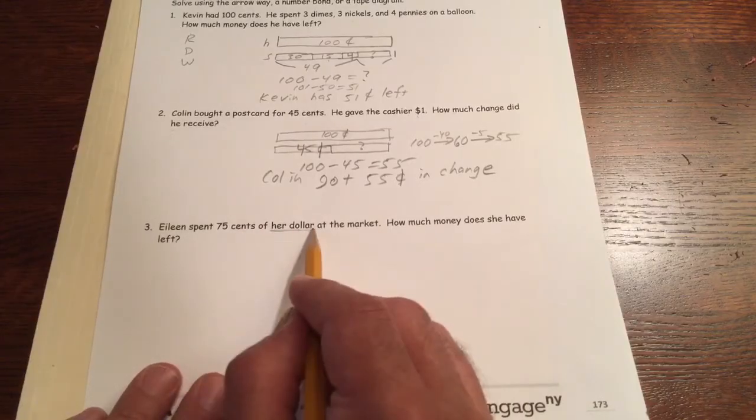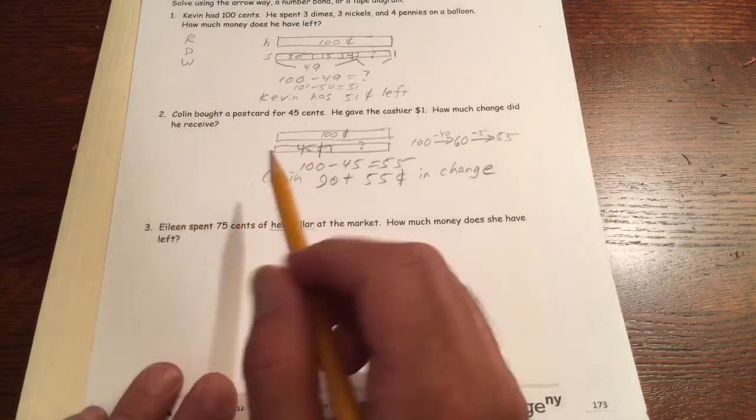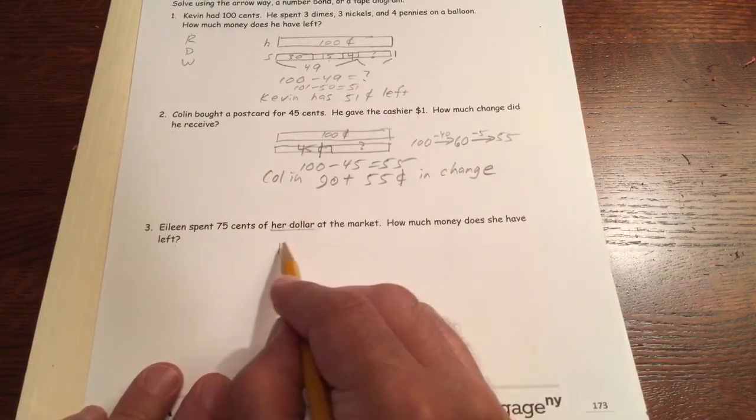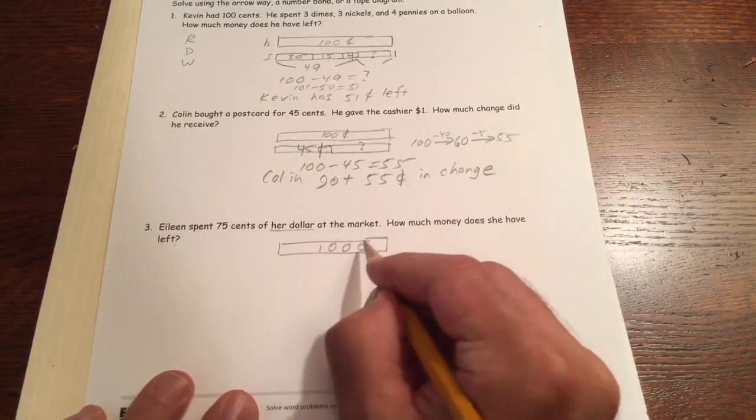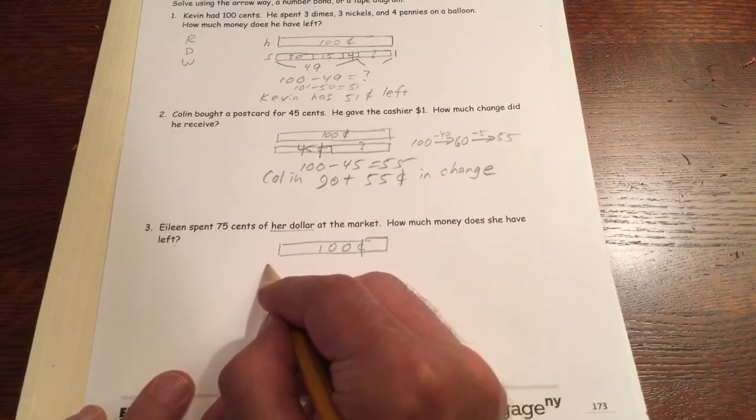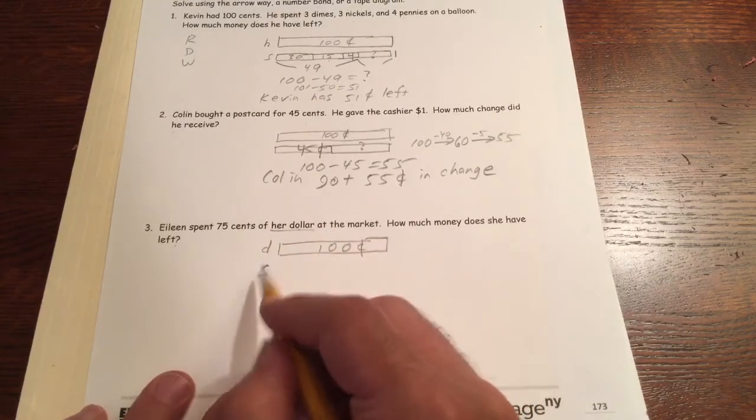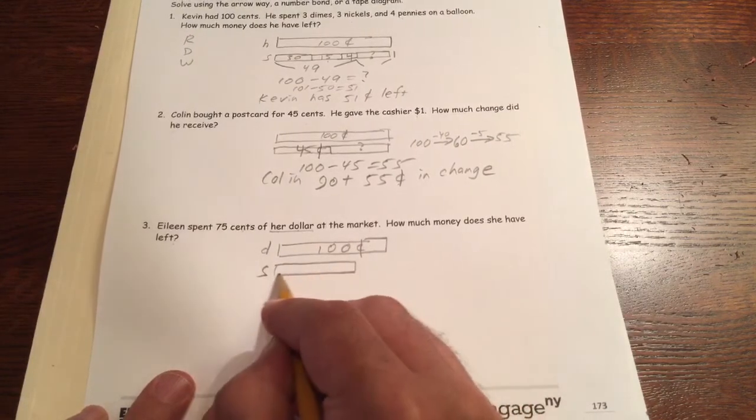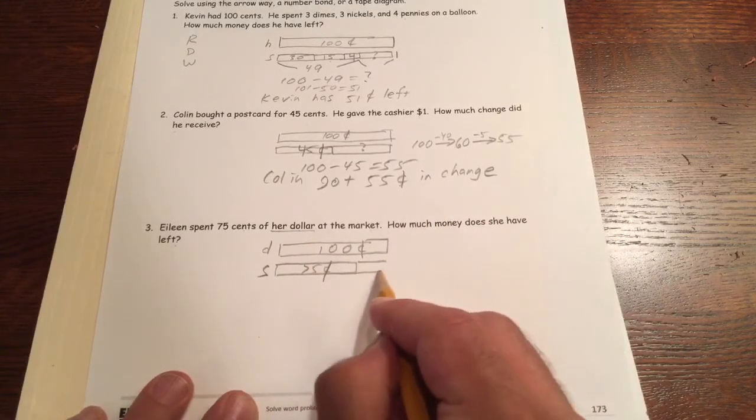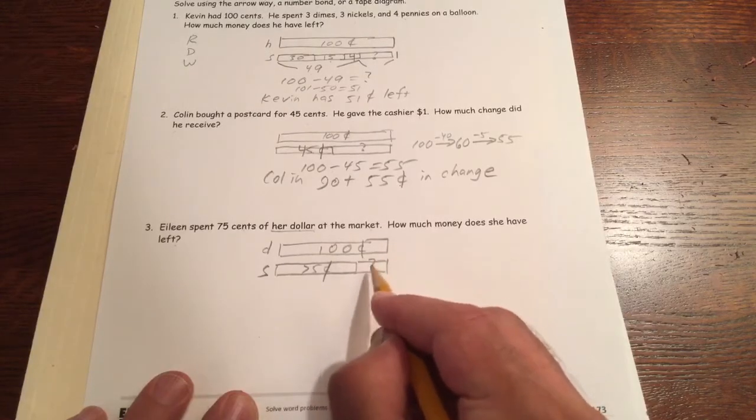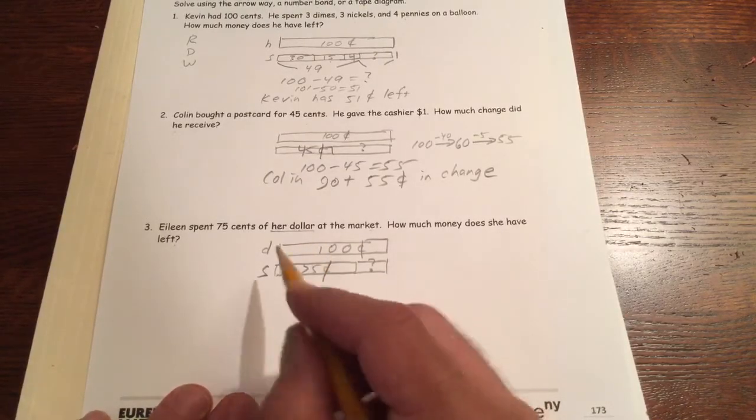Eileen spent 75 cents of her dollar at the market. How much money does she have left? This is very similar to Colin, except the numbers are a little bit different. She has a dollar, that's 100 cents. That's what she had, that's her dollar. She's going to spend 75 cents. If you know your quarters: 25, 50, 75.